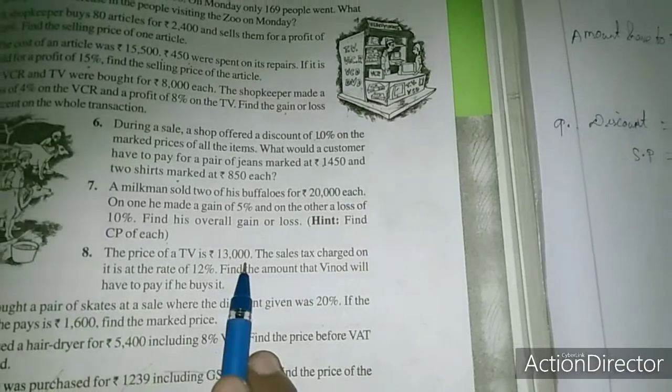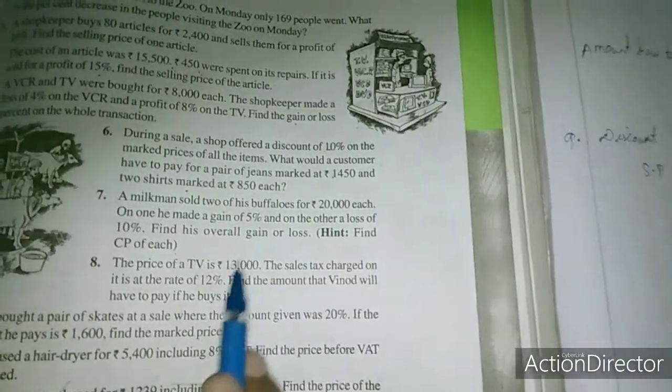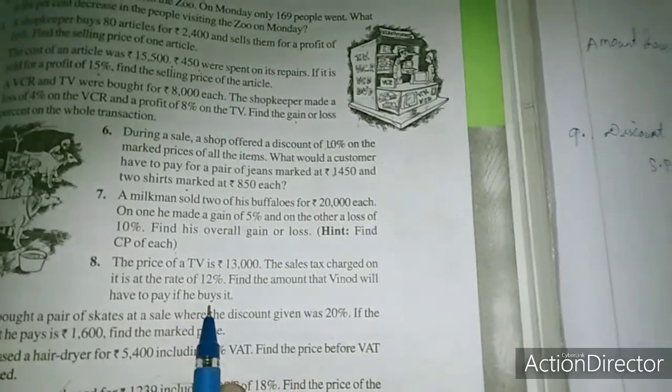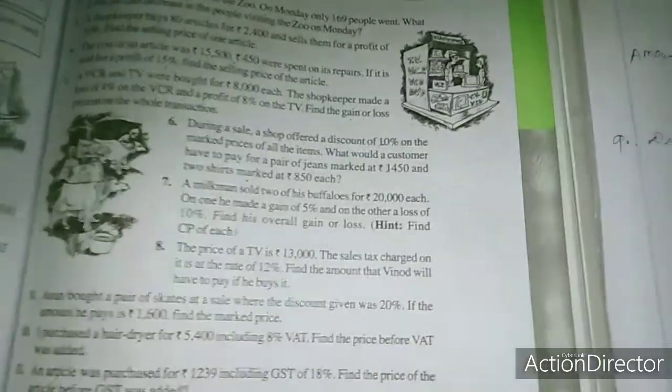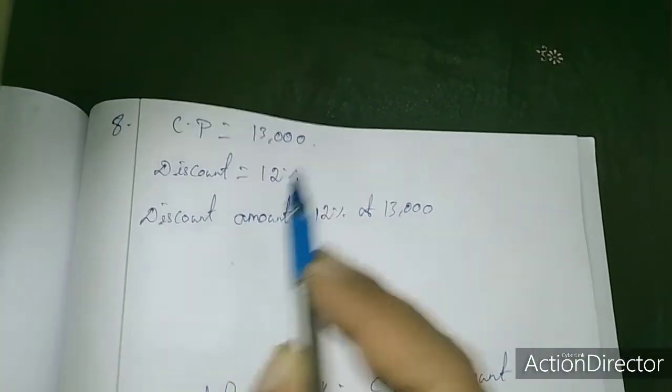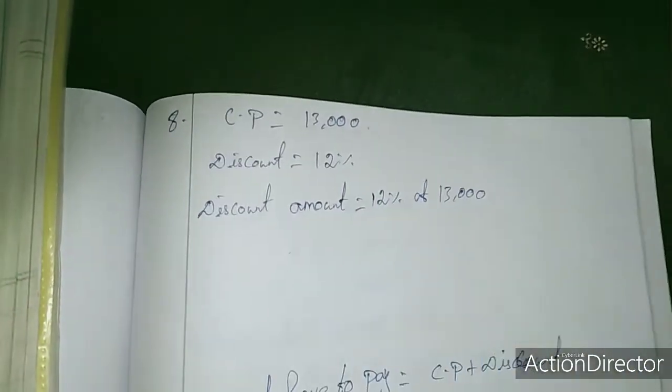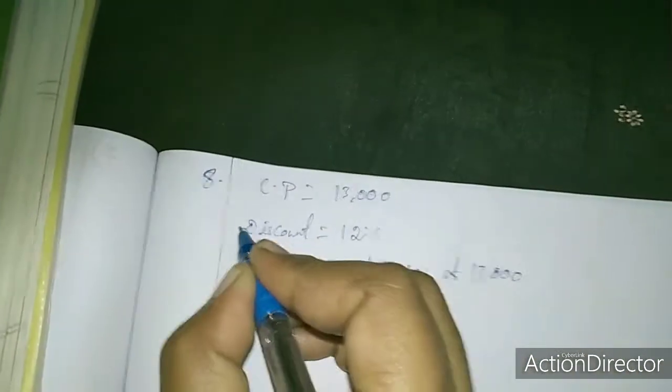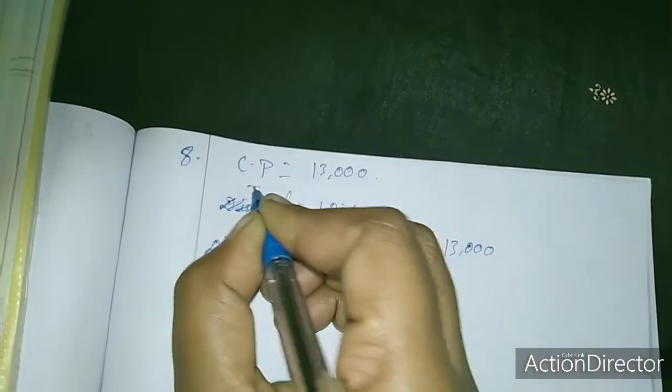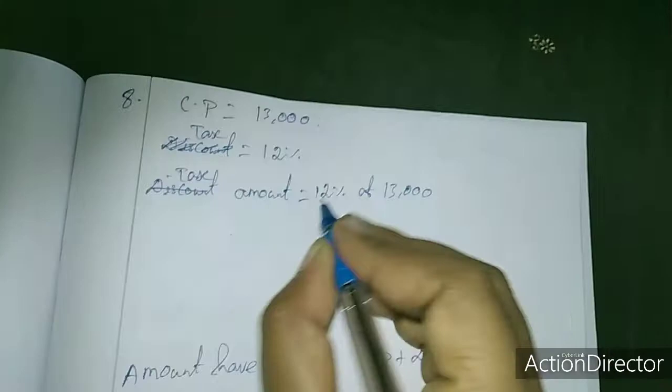The price of the TV is 13,000 and the sales tax is 12%. So tax amount is 12%, sorry I wrote wrongly, this is not discount, it's tax. Okay, so tax amount equals...